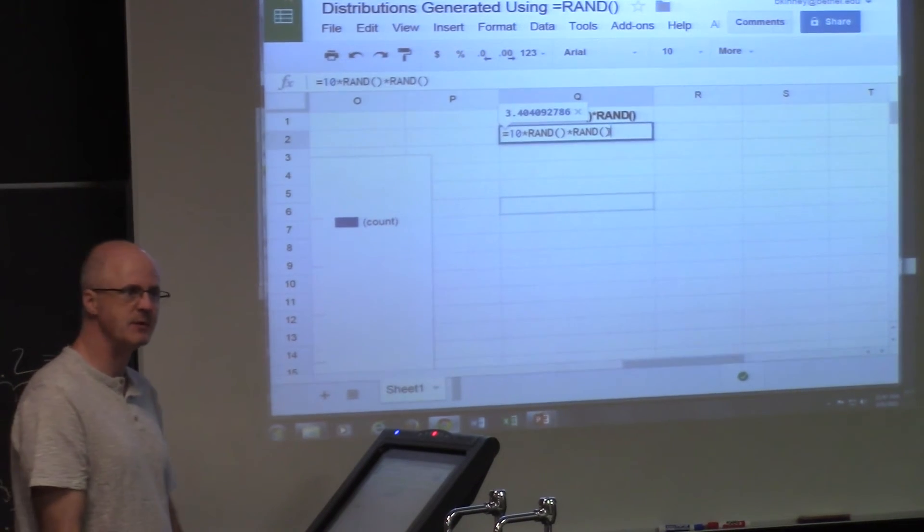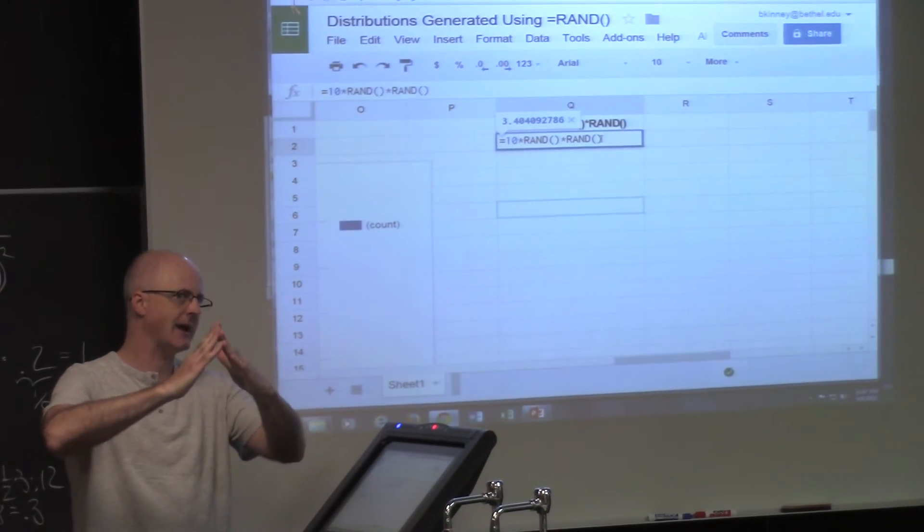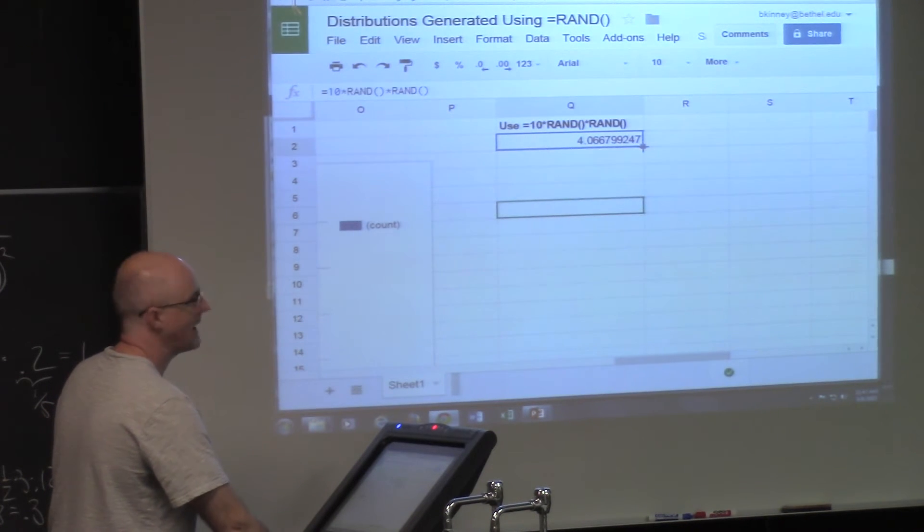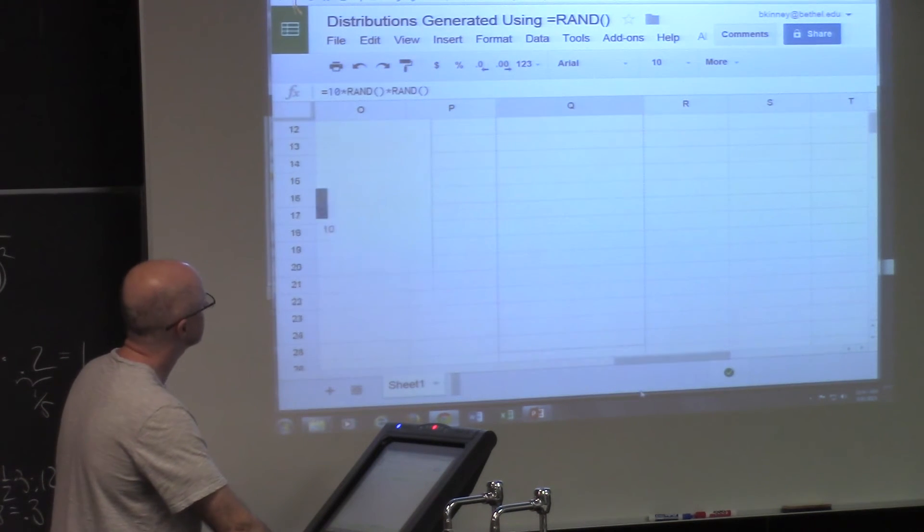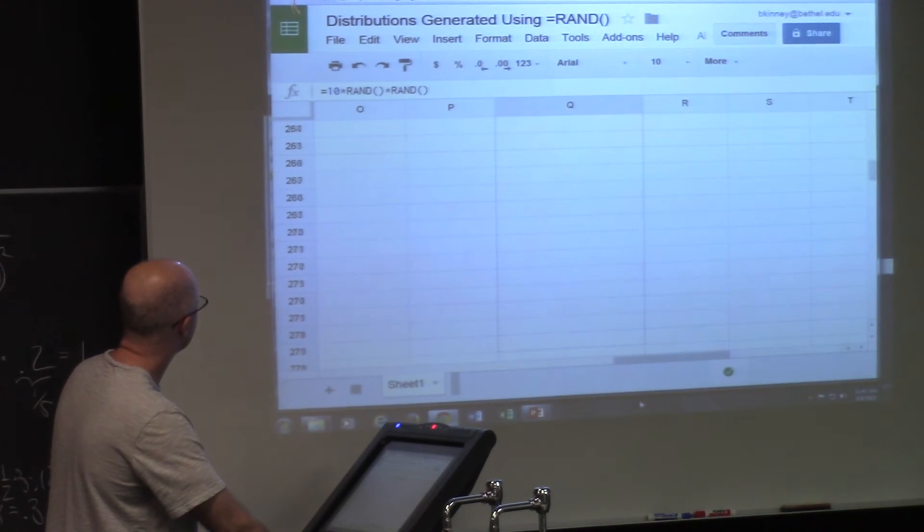To get random numbers between zero and one again, I wonder if these are going to be distributed with a uniform or a triangular. Let's see what happens. Do it five hundred times, copy and paste, click and drag, until you get to row five hundred and one.